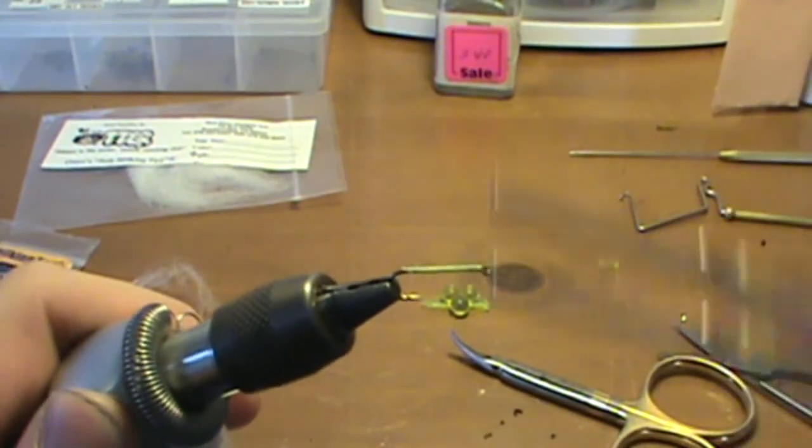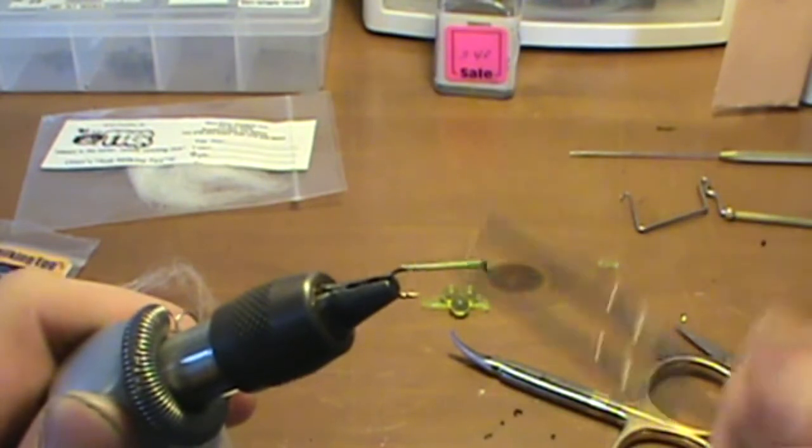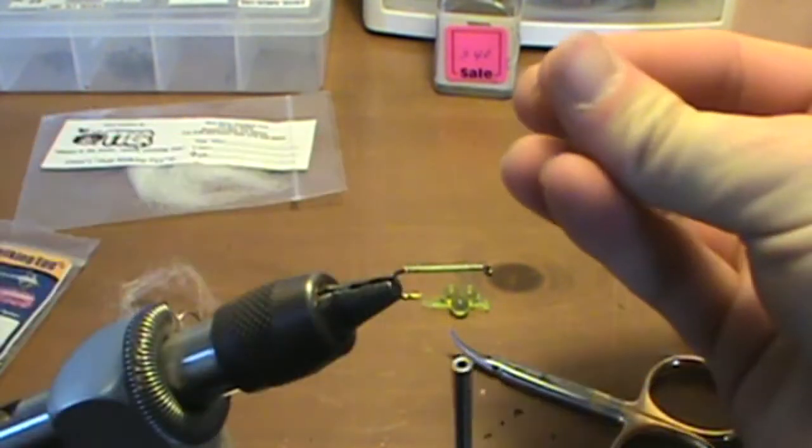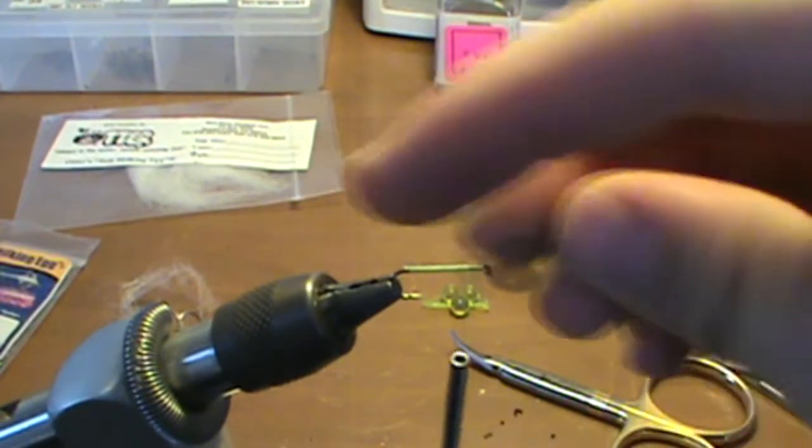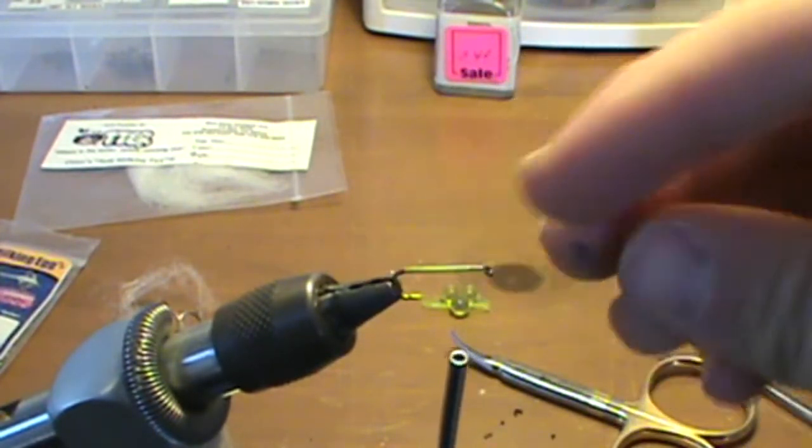And the reason that you wrap back is if you don't, these eggs are rubber and they'll just slide right off. So this just gives it something to hold onto.